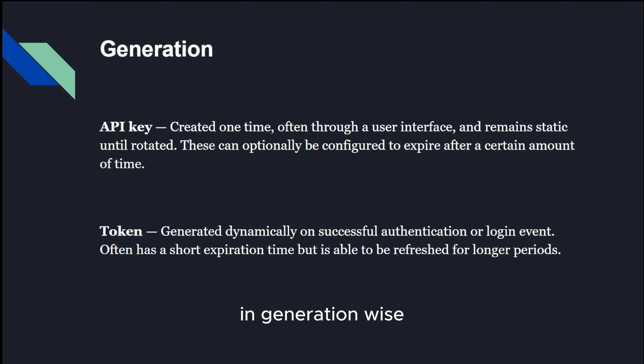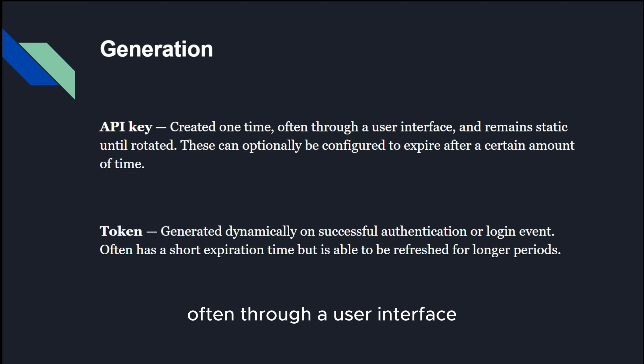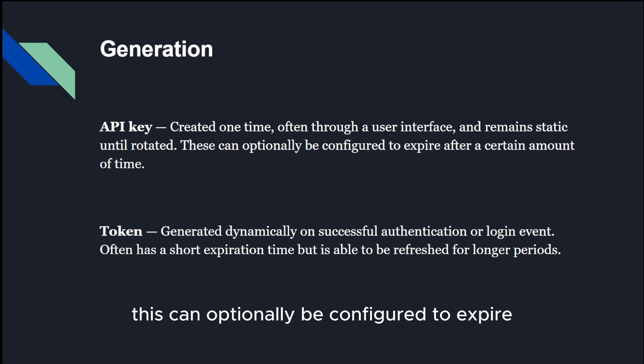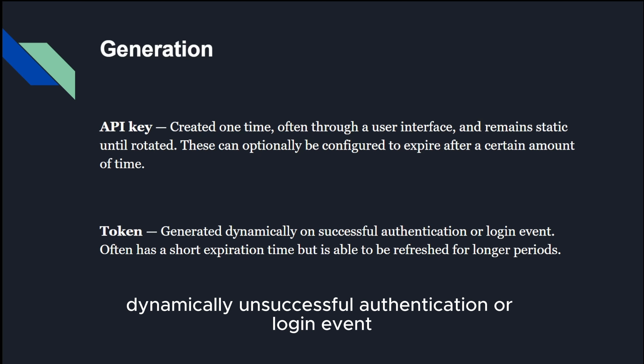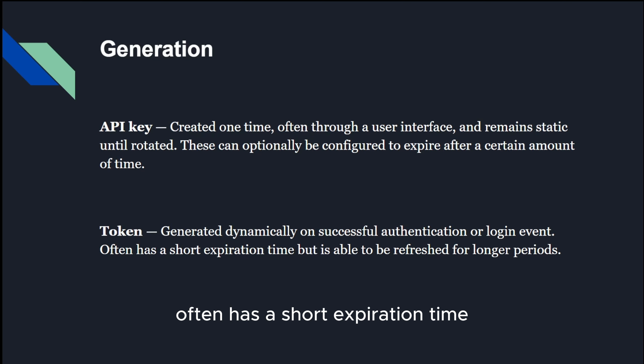In terms of generation, an API key is created one time, often through a user interface, and remains static until rotated. These can optionally be configured to expire after a certain amount of time. Whereas a token is generated dynamically on a successful authentication or login event, often has a short expiration time, but is able to refresh for longer periods.